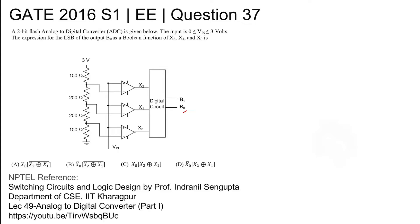This is the ADC converter and four options are given for B0 expression. For NPTEL reference, you can refer to lecture 49, Analog to Digital Converter Part 1, of the NPTEL course Switching Circuits and Logic Design by Professor Indranil Sengupta, Department of CSE, IIT Kharagpur.